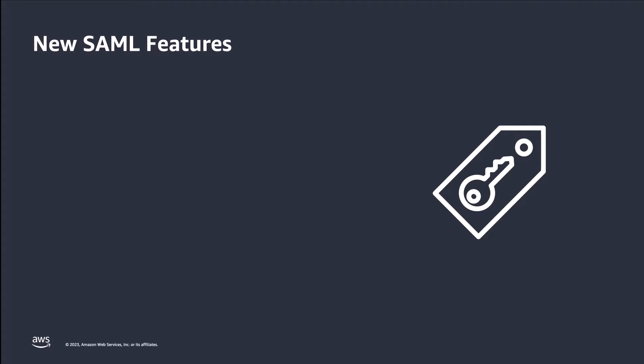Just before I walk through the demos, I would like to introduce three new SAML features to Amazon Cognito. Support for identity provider initiated login, also known as IDP initiated login. With this feature, your Cognito user pool can accept unsolicited SAML assertions from your identity provider, which can improve the user experience of federated users. However, make sure this is aligned with your organization's security posture. As a security best practice, you should consider only allowing service provider initiated SAML sign-in requests — this is when a sign-in request is initiated from your Amazon Cognito user pool before you accept an assertion.